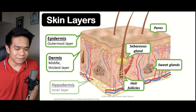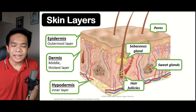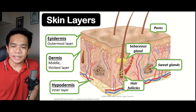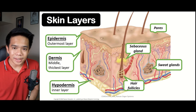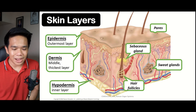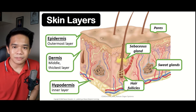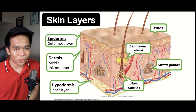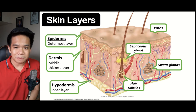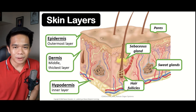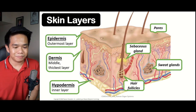After the dermis, we have the hypodermis. It is considered as the innermost layer of the skin in which most of the blood vessels, together with the fat layers and nerve endings, are found. The nerve endings help in terms of the function of the skin as a sense organ.